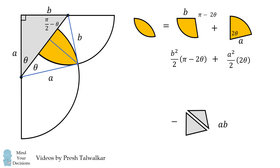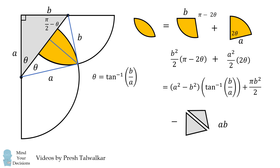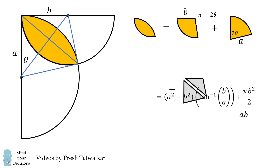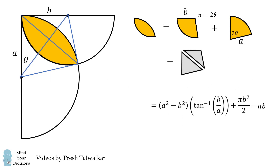What is theta? Using trigonometry in the right triangle, theta equals the inverse tangent of B over A. Substituting that in and simplifying, the area of a geometric lens simplifies to: (A squared minus B squared) times the inverse tangent of B over A, plus pi times B squared, all over 2, minus AB.